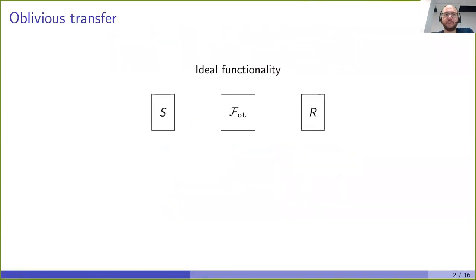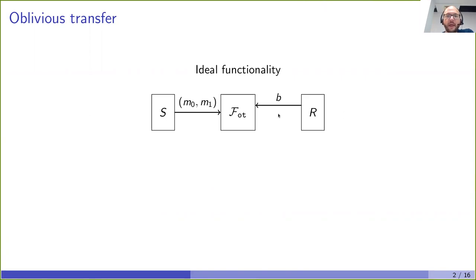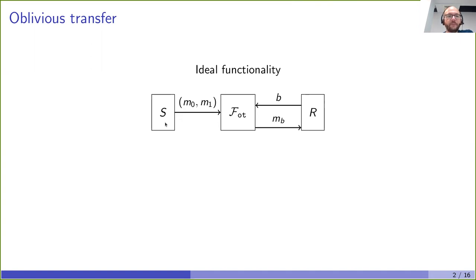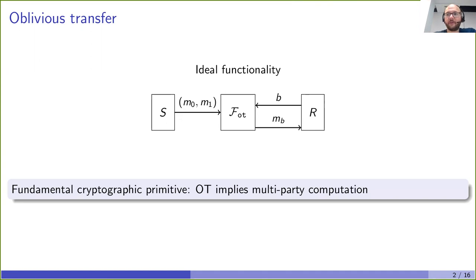The main object of our result is implementing the OT functionality. We have two parties, a sender and a receiver. The sender sends two messages M0 and M1 to the ideal functionality, while the receiver inputs a bit B. The ideal functionality passes the message M_B to the receiver. The sender doesn't learn which bit B the receiver chose, and the receiver doesn't learn the second message. OT is a fundamental cryptographic primitive — in particular, it implies multi-party computation.